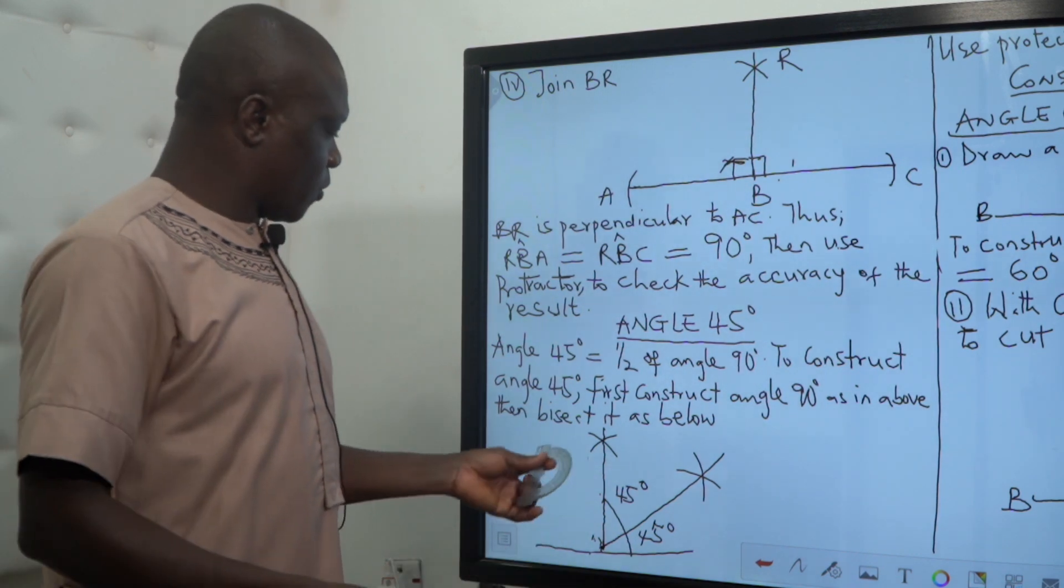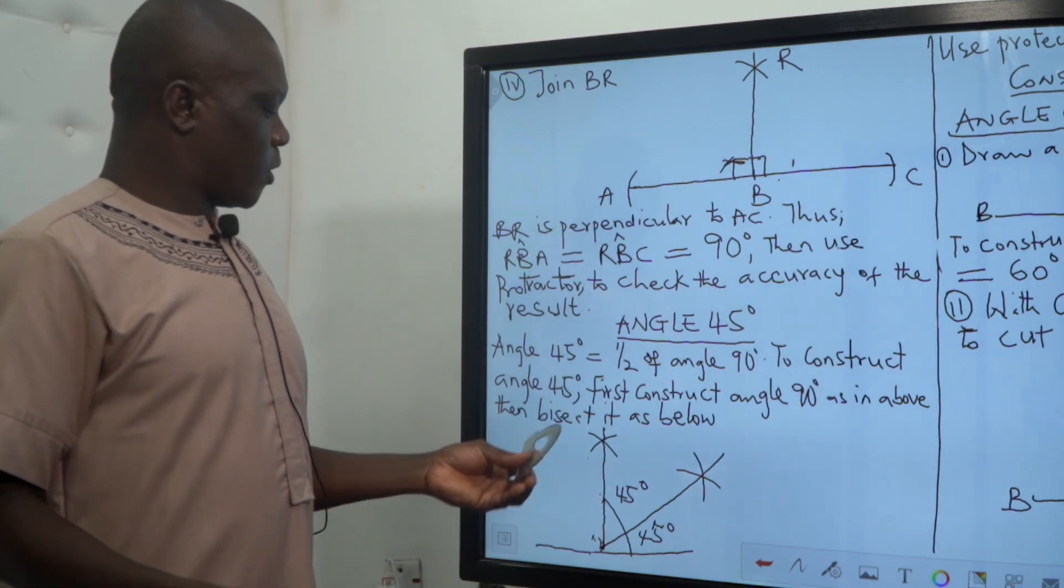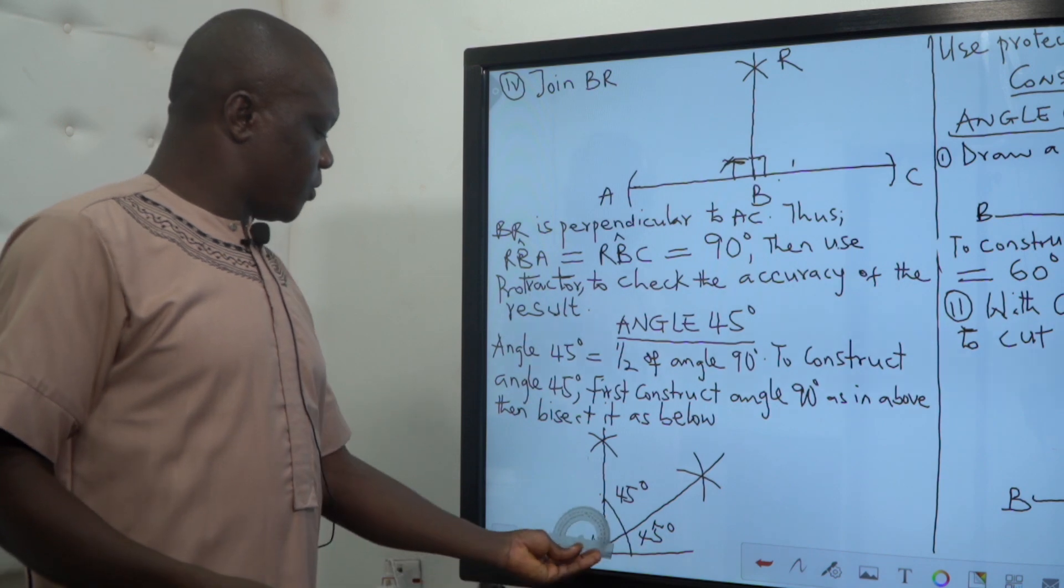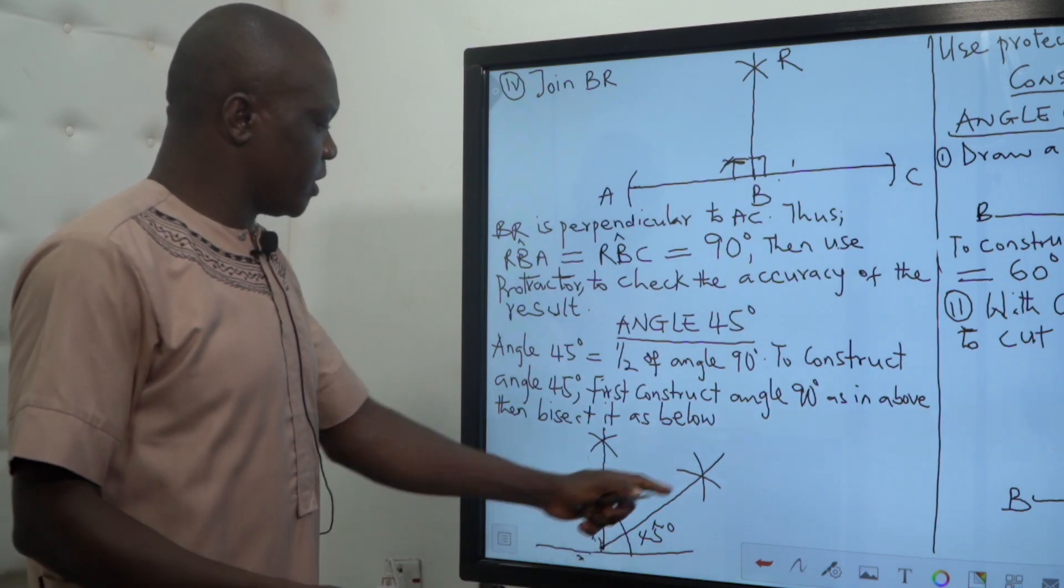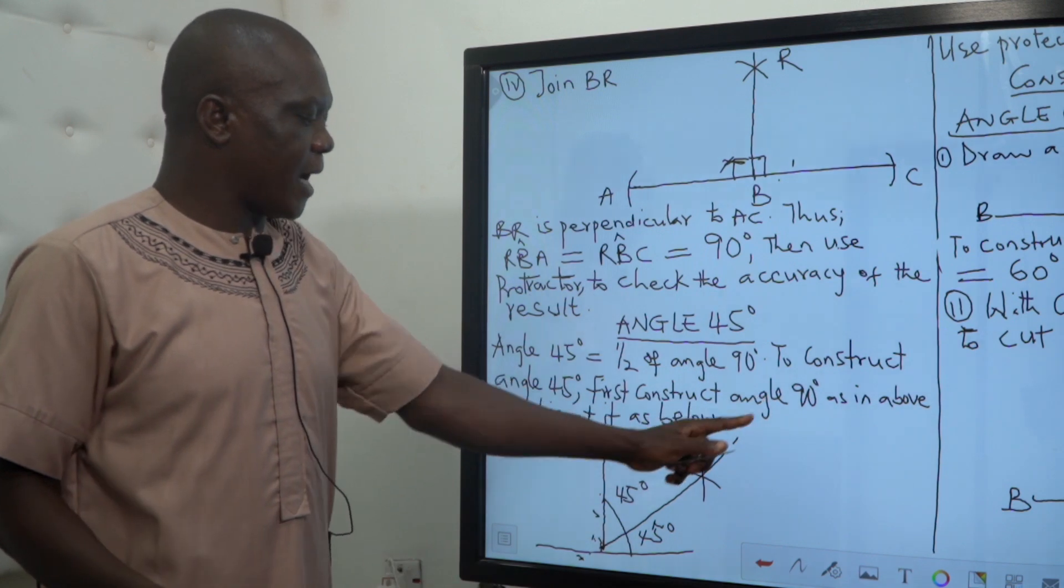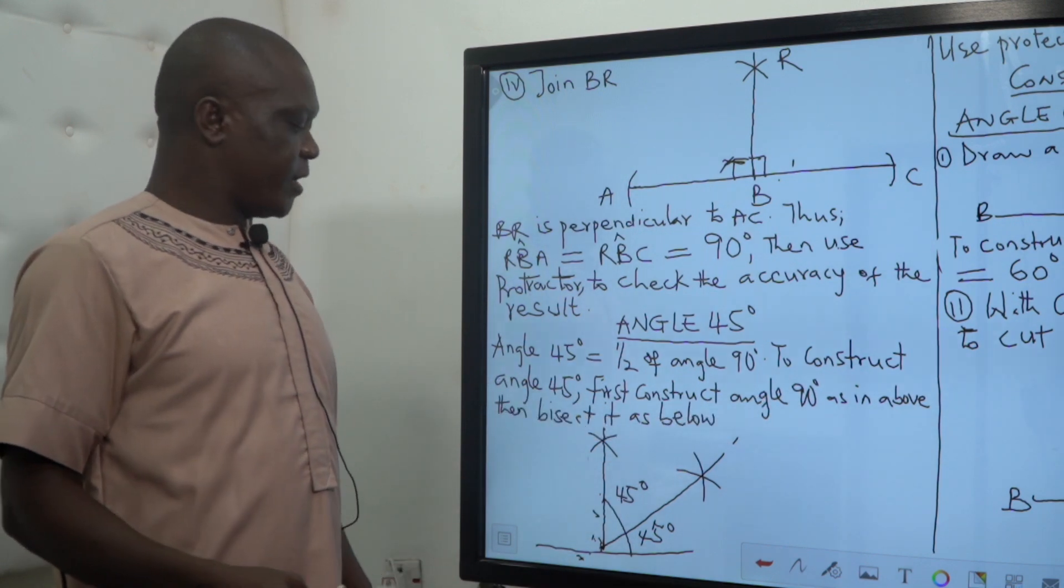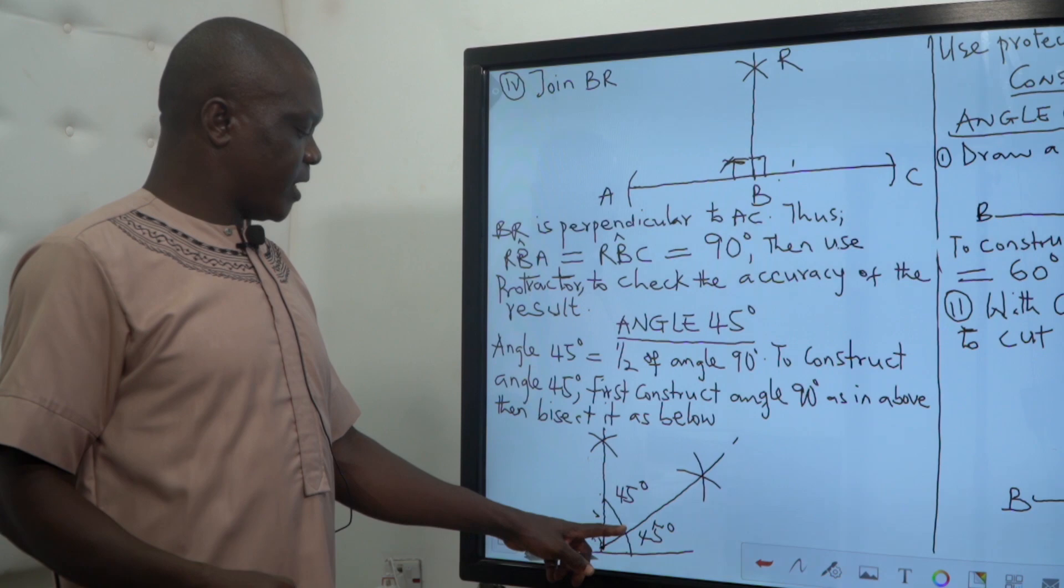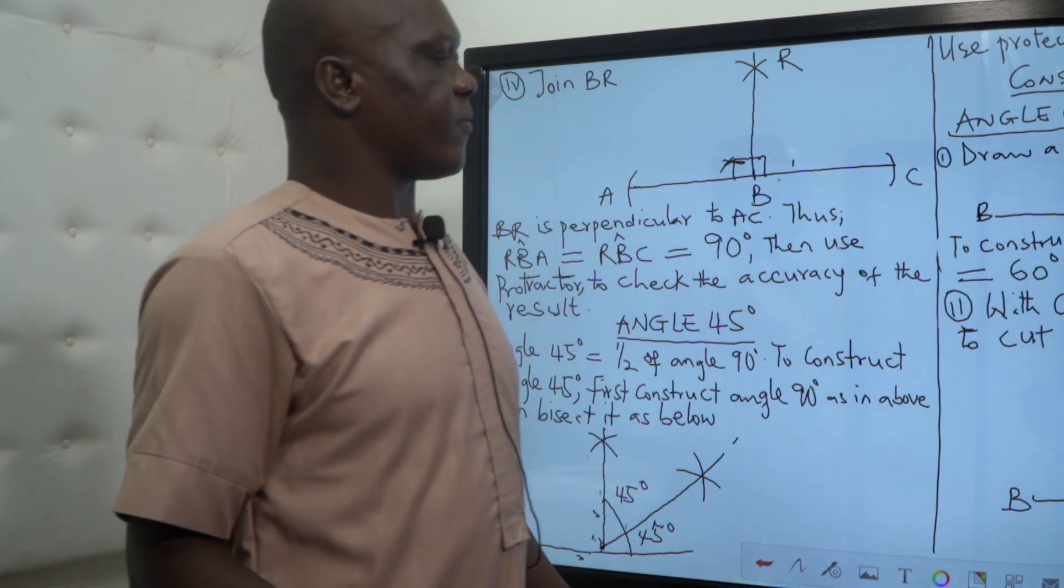If you now want to know whether what you have done is correct, you still use a protractor and place it like this. You will see that this line will be at the top of 45 degrees, which means from here to here is 45. From here to here is 45.